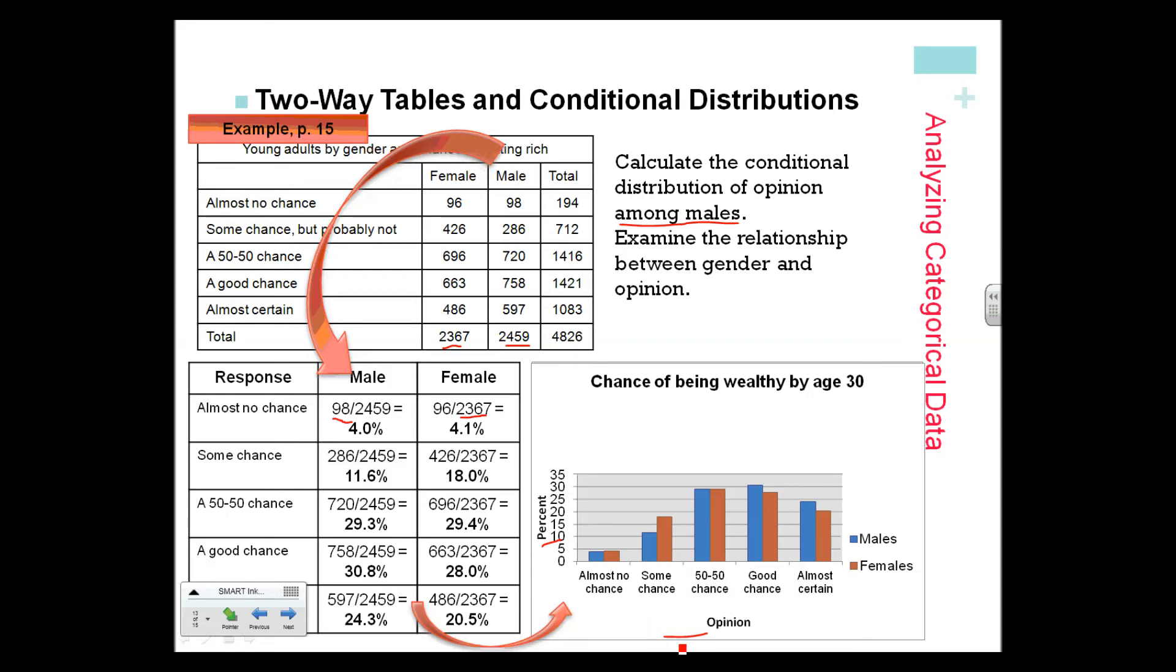We do the percents for the females, and that gives us these red bars. We can easily look and see how males and females compare. They're not a lot different. More females, a higher percentage of females, said some chance. It's almost identical for 50-50, which isn't really surprising. About the same for almost no chance. You can talk about the similarities and differences. Make sure when you're doing that, you talk about every category when you're describing these distributions.